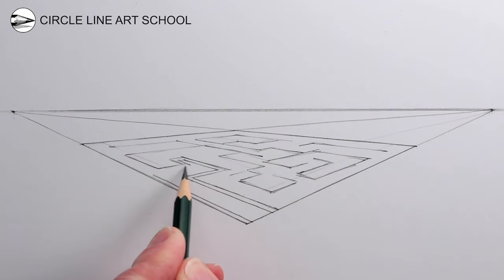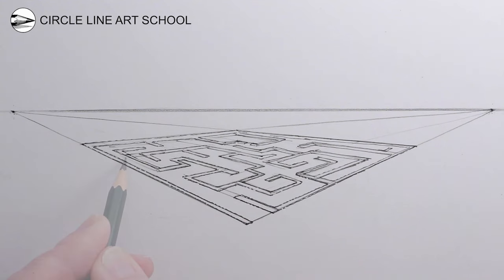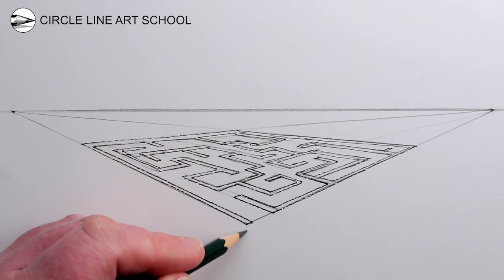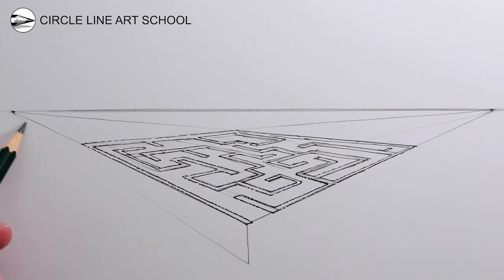Once you have done that, then draw a vertical line at the bottom base of the square outline of the maze, and then a line receding to each of the vanishing points to give a sense of depth to the outside of the shape of the maze.